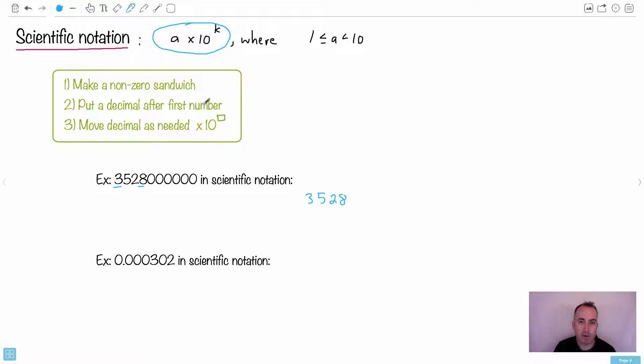I put a decimal after the first number. In other words, boom. Now I've got 3.528. Do you see now my first number right here? I'm going to write it as A times 10 to the K. Look at my very first number now. This is going to be A. Look, it's between 1 and 10. Ta-da! So now we've got this.